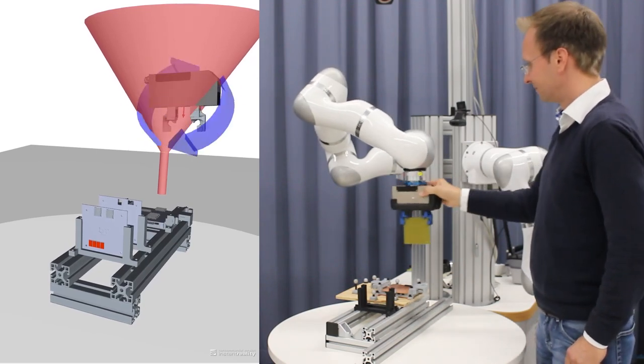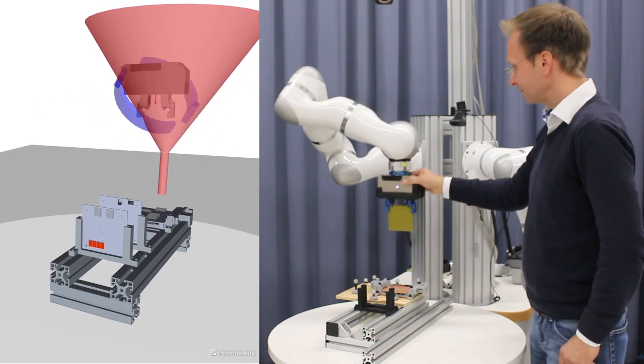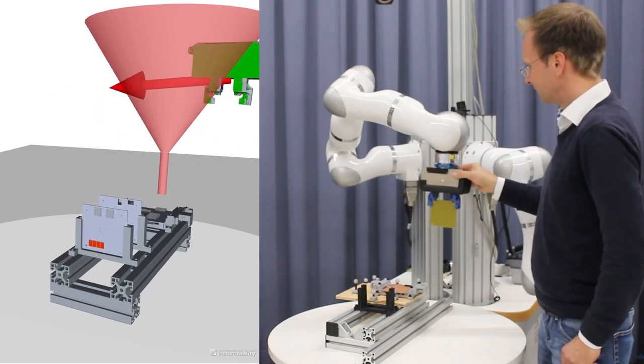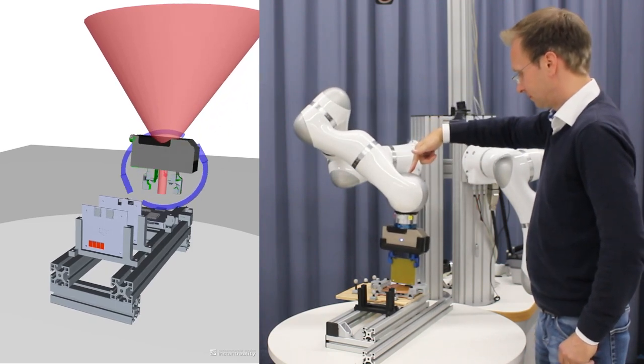We have two virtual fixtures. A torque, which corrects the orientation of the gripper, and a virtual elastic funnel, which directs the position of the gripper to the insertion point.